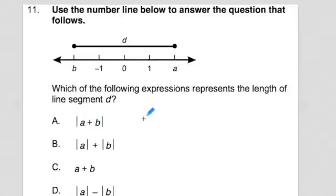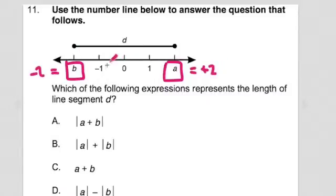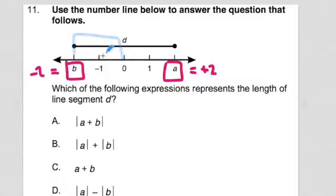Now let's think about the problem. It gives me this A and B, and I'm trying to solve for D. The best thing to do is to make this problem concrete. It looks like B could be negative 2, and it looks like A could be positive 2. If B was negative 2 and A was positive 2, then that's 2 units away and that's 2 units away — so D is 4.